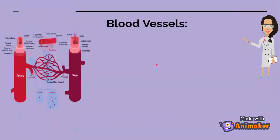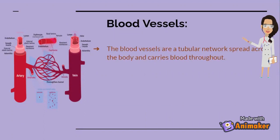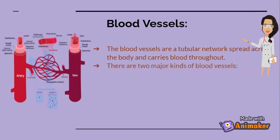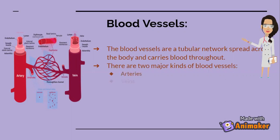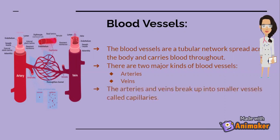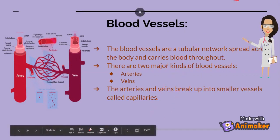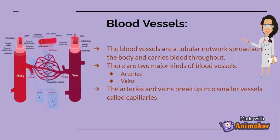Now let's learn about blood vessels. The blood vessels are a tubular network that spread across the body throughout. There are two major kinds of blood vessels: arteries and veins. The arteries and veins break up into smaller vessels called capillaries.